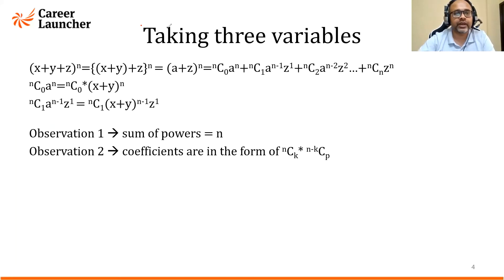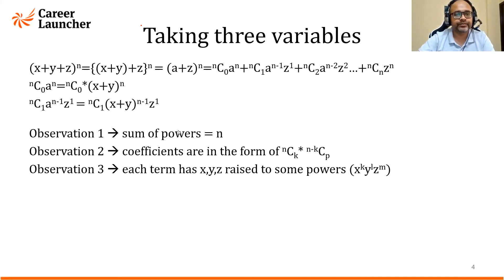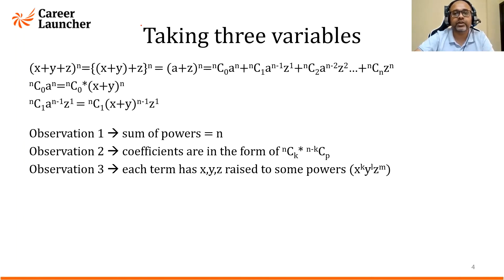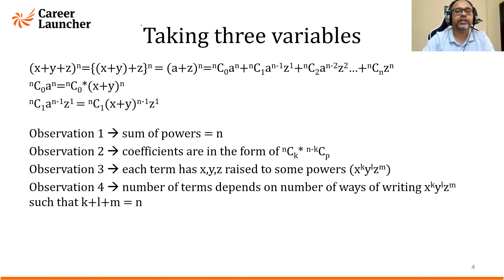The third observation: for any term x^k · y^l · z^m, the sum of the powers k + l + m is always equal to n, just like in binomial theorem. The powers of the variables must always sum to n.